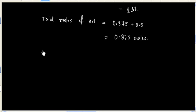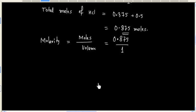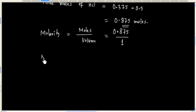Now we can find molarity. Formula is moles by volume. Moles is 0.875 and volume is 1 litre. So molarity of HCl is 0.875 M.